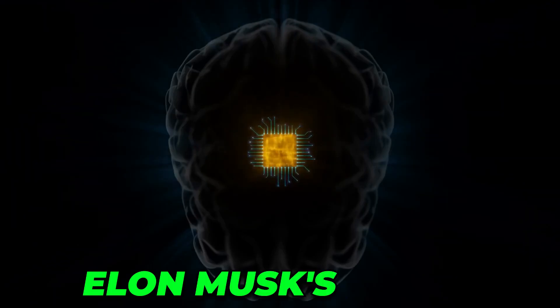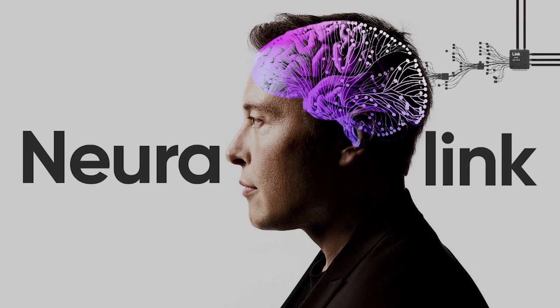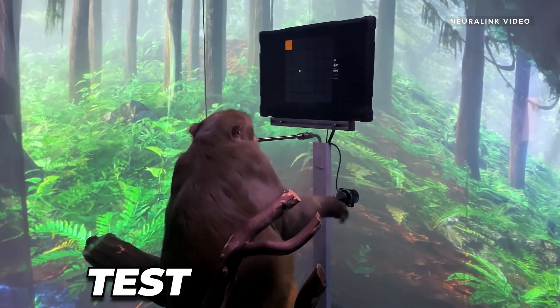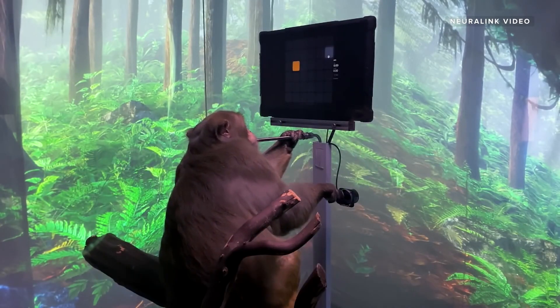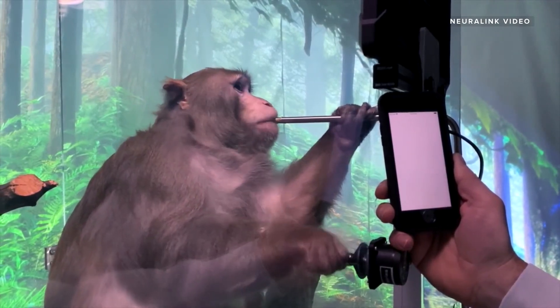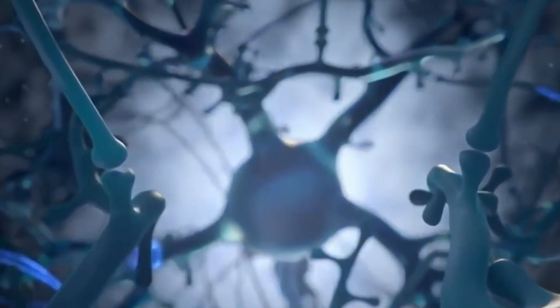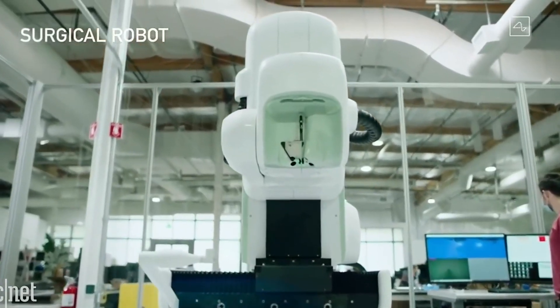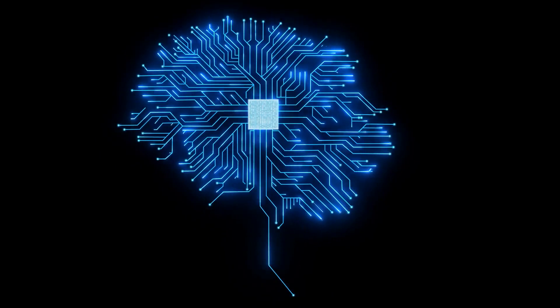Recently, Elon Musk's brain chip company Neuralink has disputed allegations that it disregarded animal welfare regulations when conducting tests on monkeys a few years ago. This year, the company intends to carry out tests on human subjects. When this happens, what impact will this significant milestone have on the field of brain implant technology?